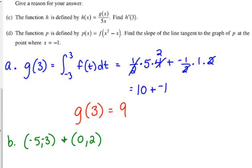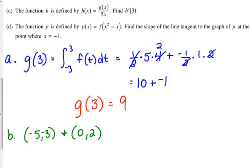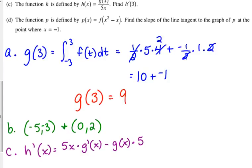Okay, c. This is why I made you do all those problems with the tables. The function h is defined by h of x is g of x over 5x. Find h prime of 3. So, we've got to take the derivative of this. How do we take the derivative of g of x over 5x? Quotient rule. We have x's in the numerator and the denominator, so we have to use the quotient rule. So, low times the derivative of the top minus high d low. 5x times g prime of x minus g of x times 5 over low squared.